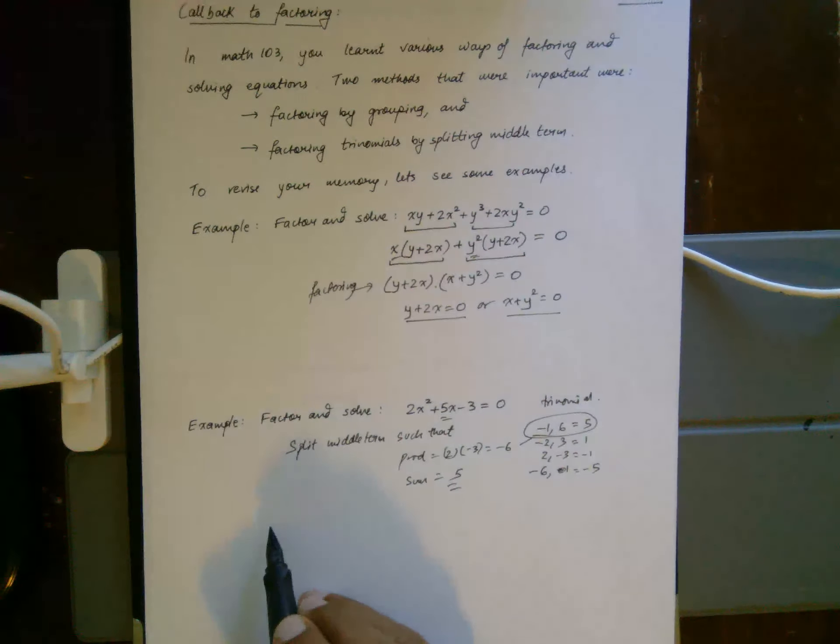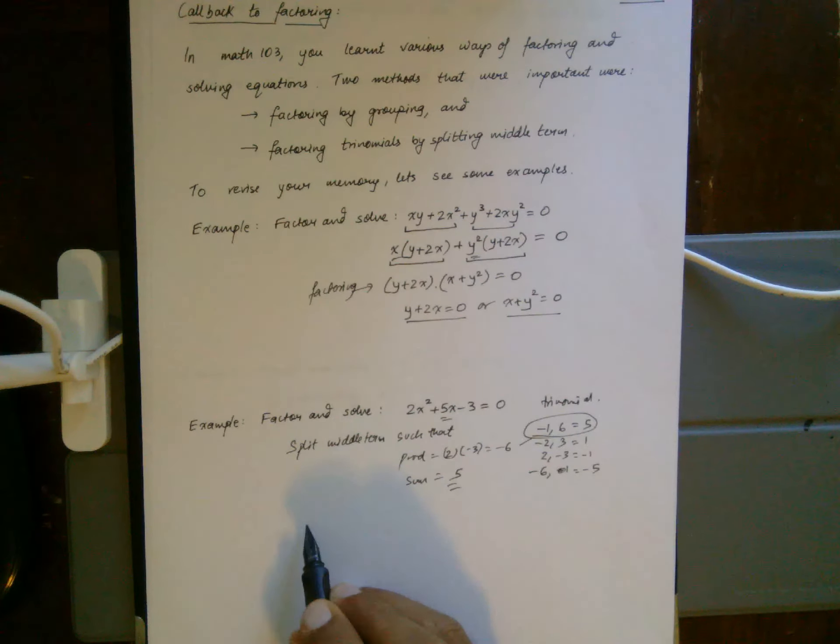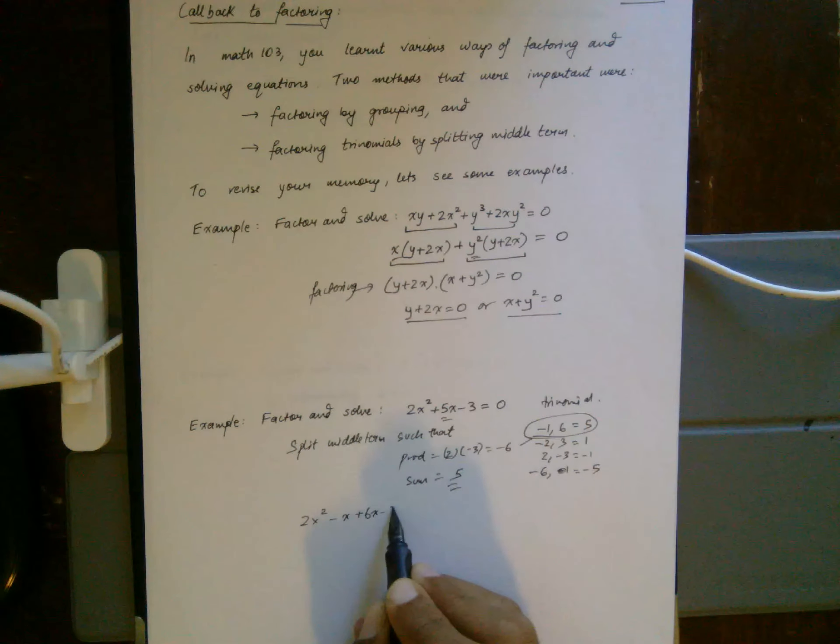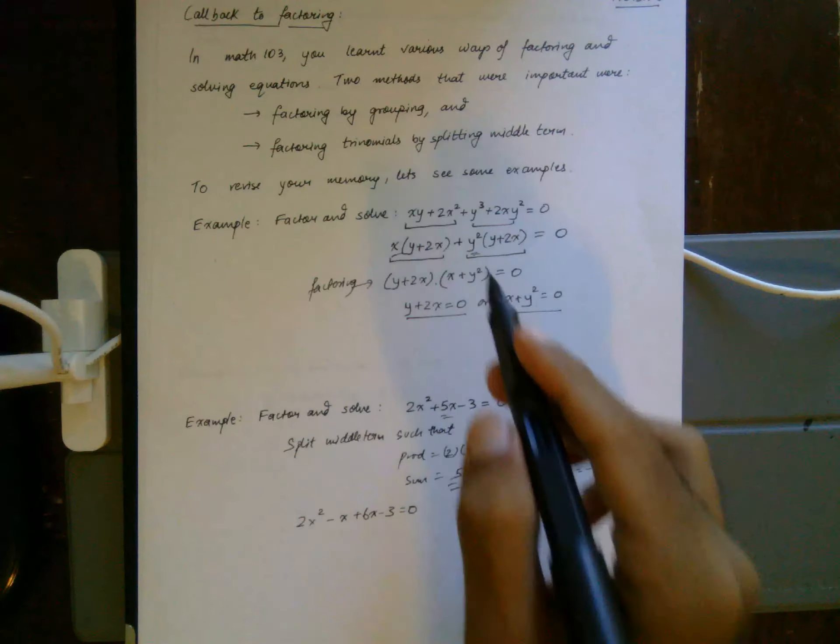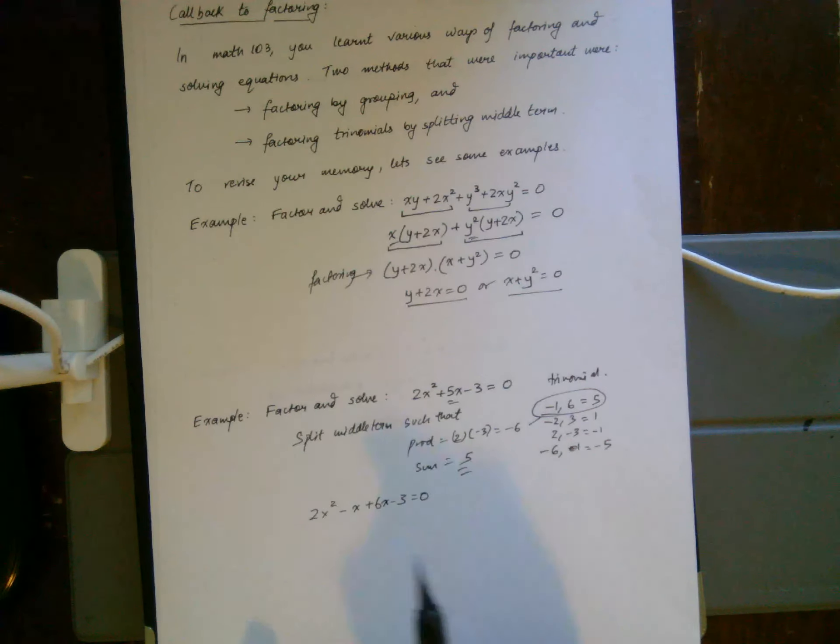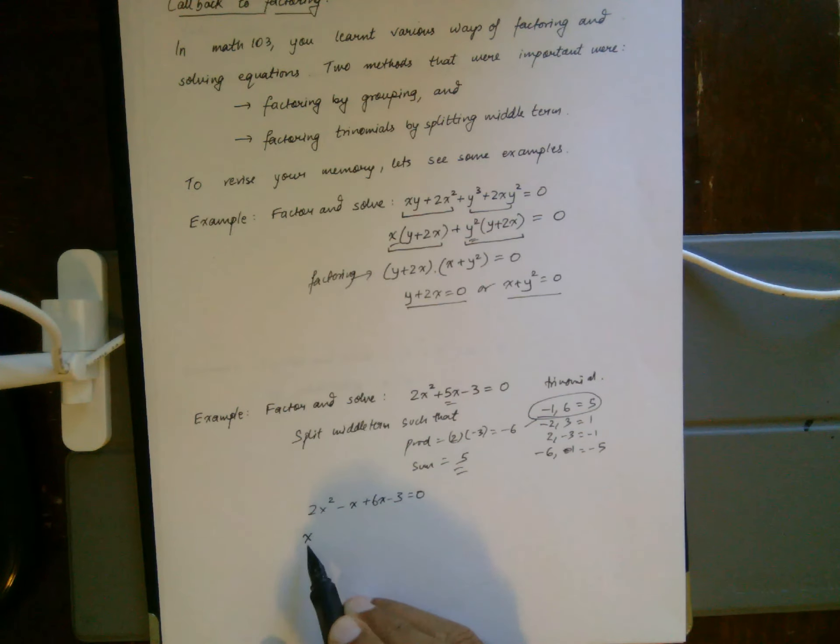Now once I split it, it becomes a problem of factoring by grouping, because I can group an x here to get 2x minus 1, and I can group a 3 to get 2x minus 1.